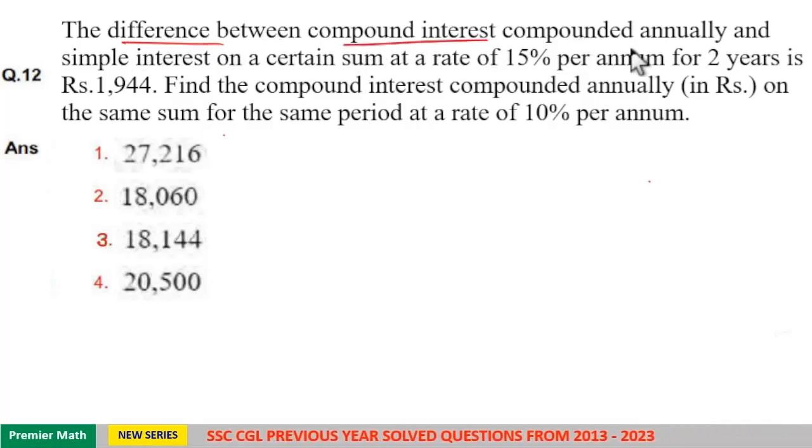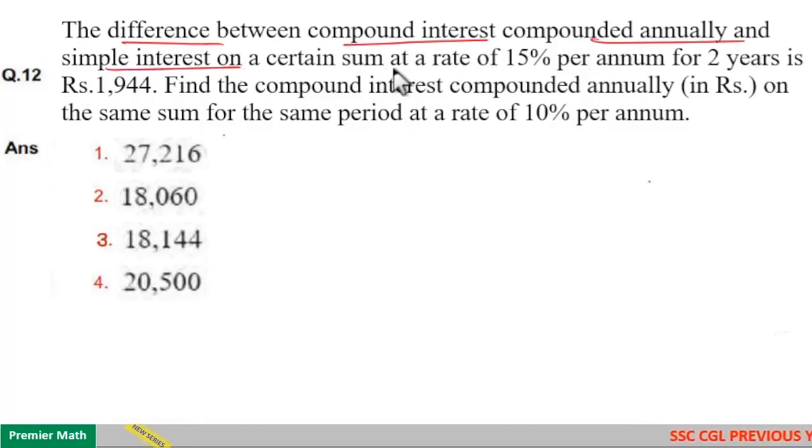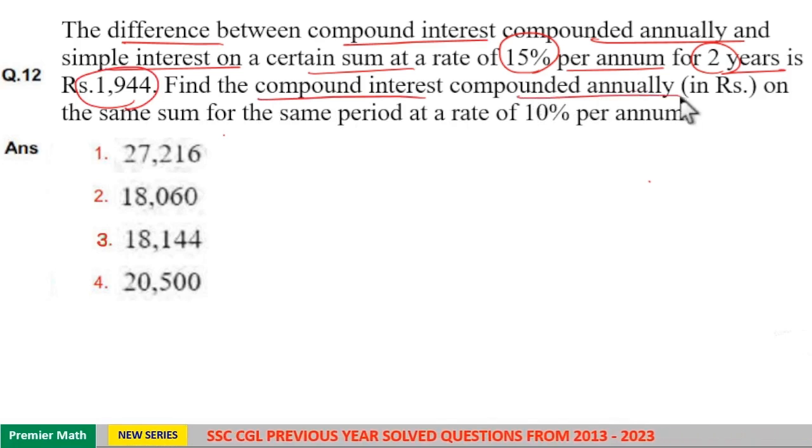The difference between compound interest compounded annually and simple interest on a certain sum at a rate of 15% per annum for 2 years is Rs. 1944. Find the compound interest compounded annually on the same sum for the same period at a rate of 10% per annum.